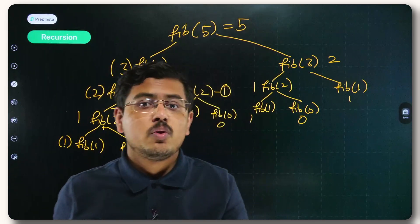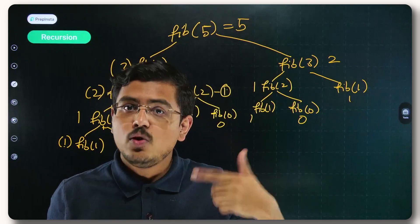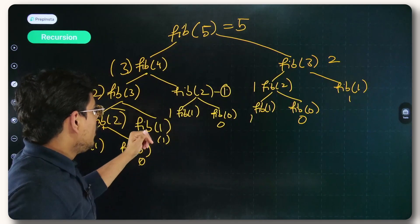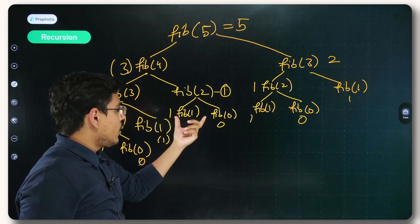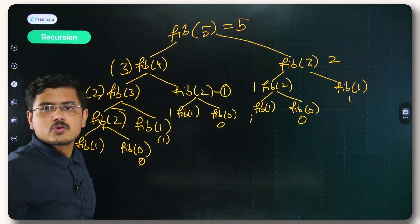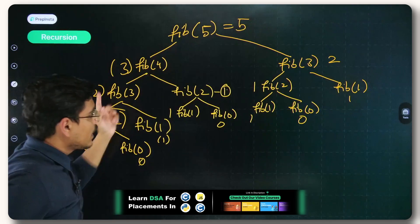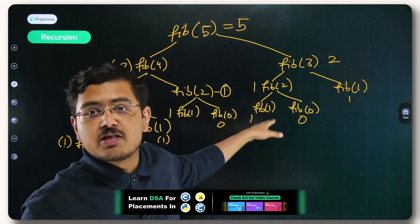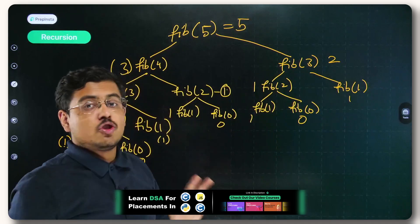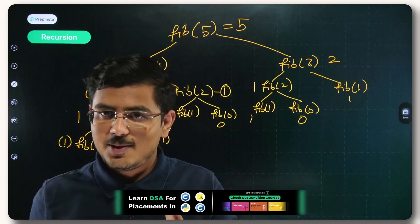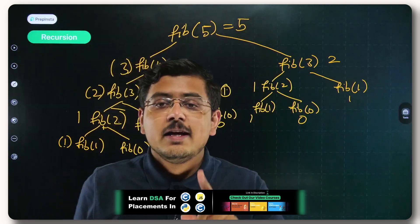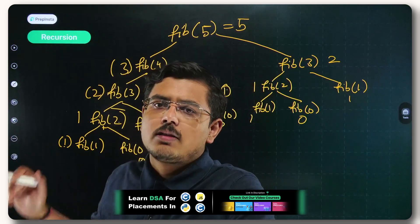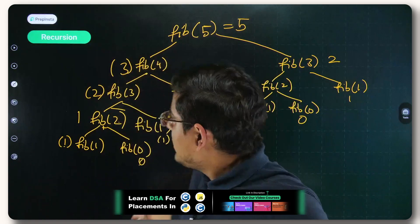Recursion is not a very good idea for the Fibonacci sequence. As you can see, Fib(1), Fib(0), and Fib(2) were computed multiple times — we had the result already but computed it again repeatedly, which means repetition of operations and wasted time. So remember that recursion is not an efficient approach for implementing the Fibonacci sequence.